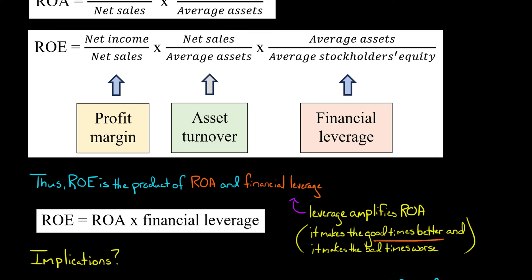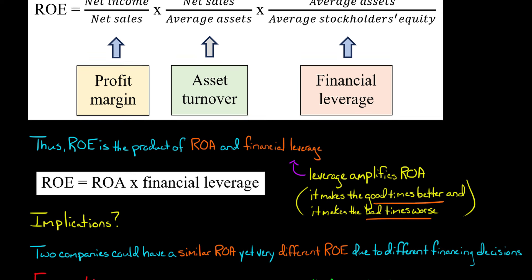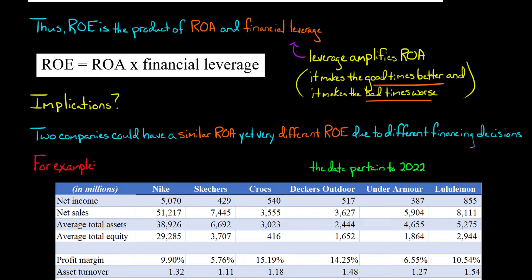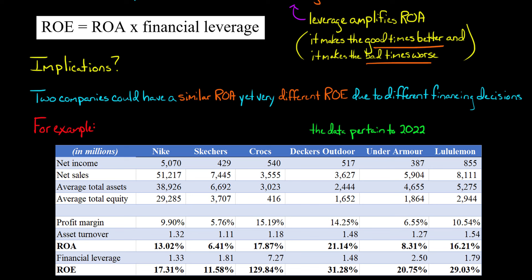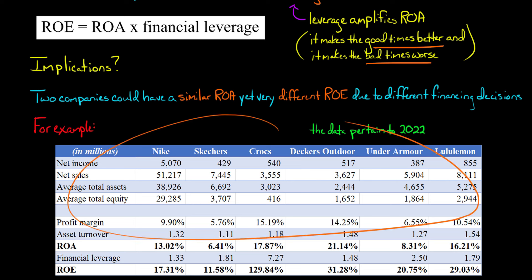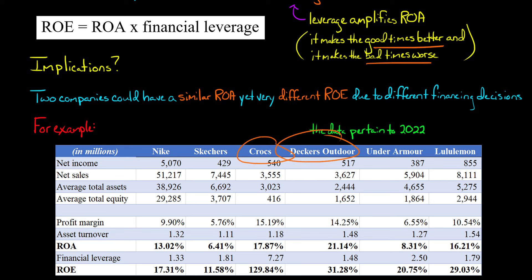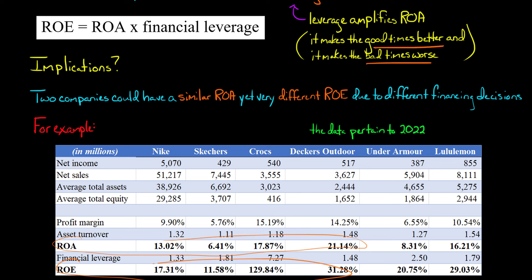Financial leverage makes the good times better and the bad times worse. Let's look at some actual data. I pulled data for footwear companies with fiscal year ends close to 2022. I've got six firms, but we'll just focus on Crocs and Decker's Outdoor Corporation. I've already done the calculations — you can see ROA in one row and ROE in another.